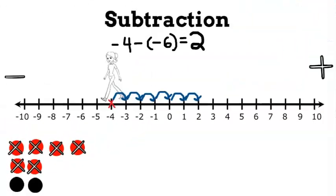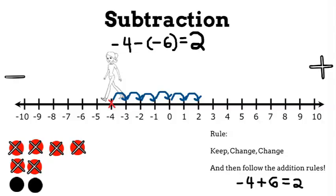If we follow the rule, keep, change, change, we would keep the negative 4, change the subtraction to an addition sign, and change negative 6 to positive 6. Then add, and that also gives us positive 2.